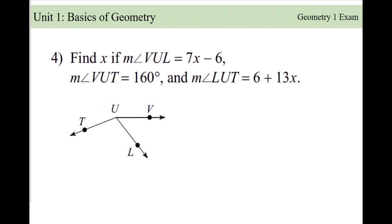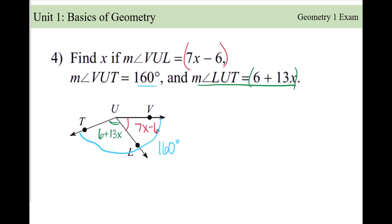Now we get to do some math. This is one of those problems people draw a blank on because there's a lot going on. I suggest you start filling in the diagram with information. We're talking about the measure of angle VUL — that measure is 7x minus 6. The measure of angle VUT, which is both angles added together, is 160. The measure of angle LUT is 6 plus 3x. Now we need to figure out how to use the angle addition postulate: add the two little angles to get the bigger one.